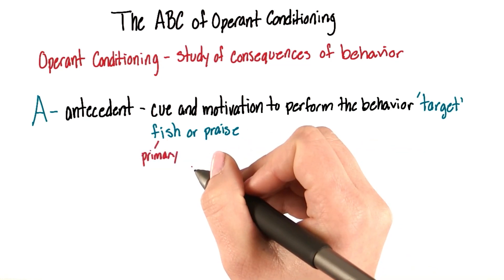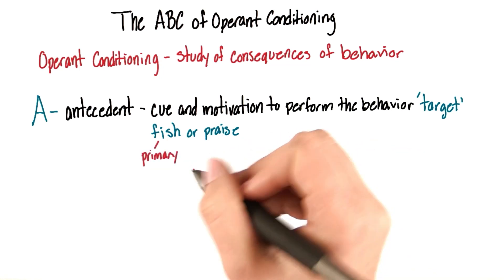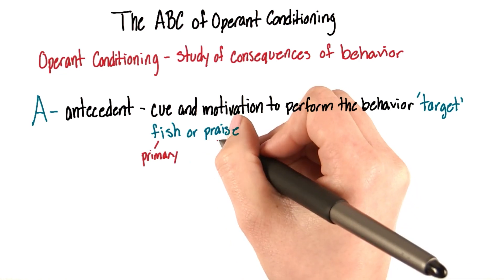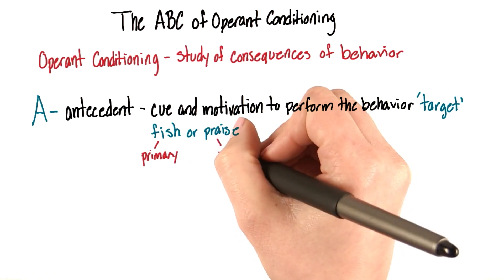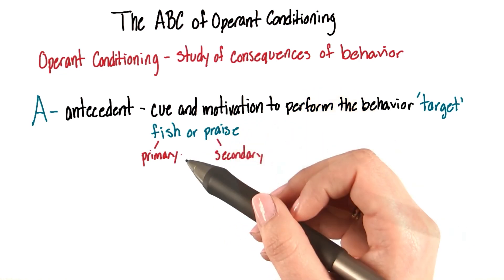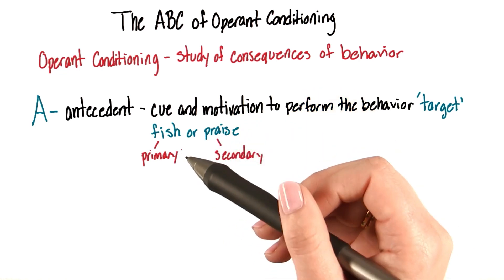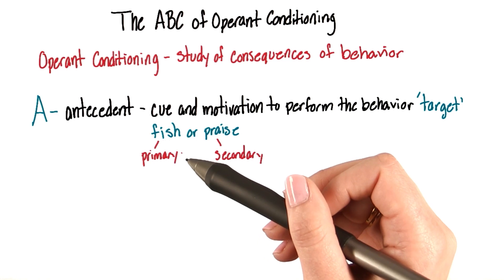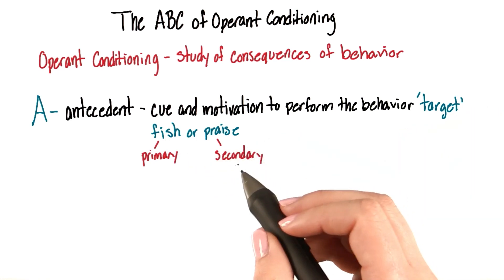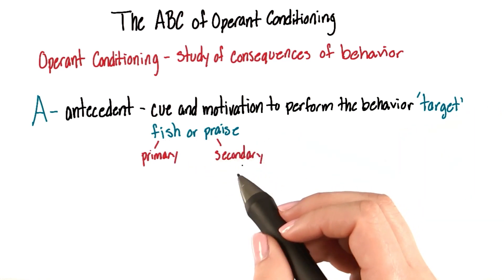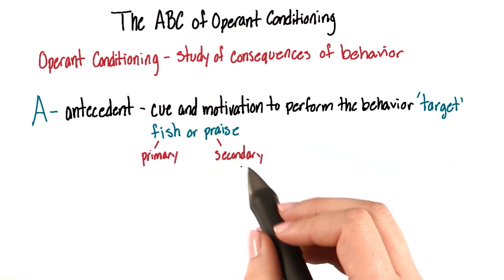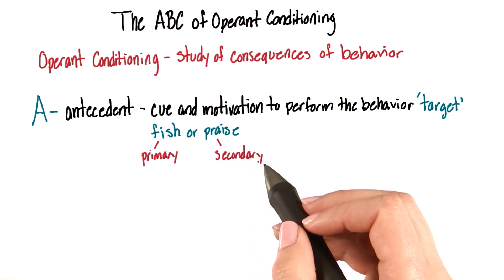One thing we should note is that fish is a primary reinforcer, and praise is a secondary reinforcer. Food would be a primary reinforcement because we need it. Praise is a secondary, or conditioned, reinforcer because we learn to enjoy praise.